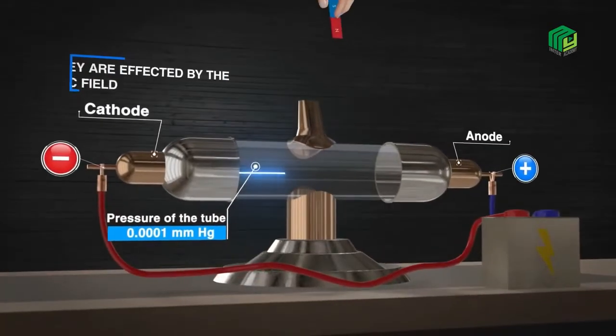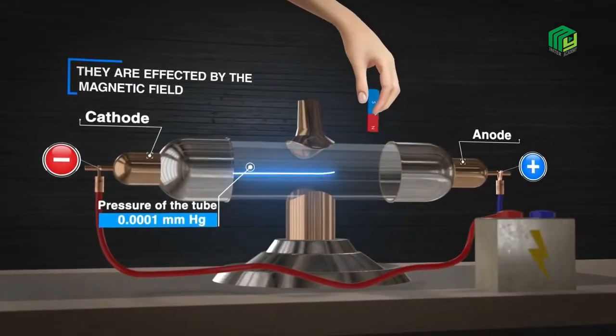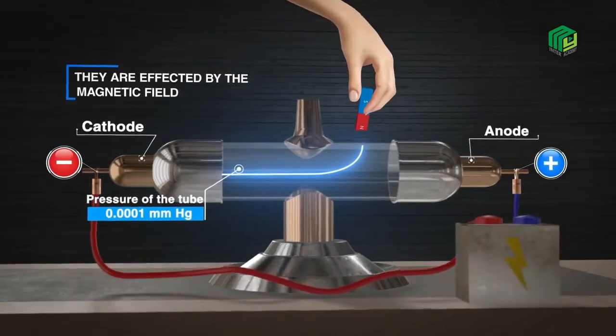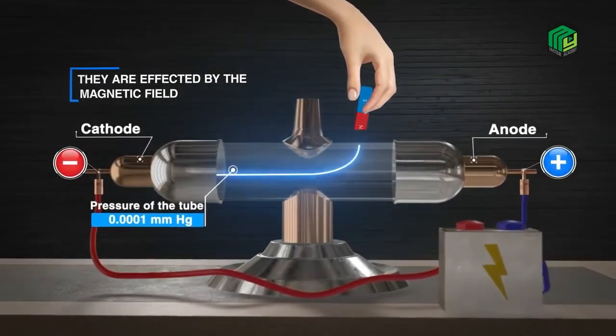Fourth, in the presence of a magnetic field, the rays are deflected. This shows that the cathode rays are affected by magnetic fields.